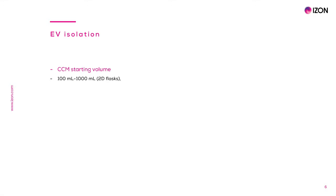The volume required to obtain enough EVs will depend on the downstream application. For 2D tissue culture flasks, more CCM volume roughly represents more cells coming from more flasks. It is recommended to start from a minimum of 100 ml of CCM and up to 1 liter or more to avoid significant EV loss during the whole isolation procedure. For bioreactors, EVs present in 12 to 18 ml of CCM have shown to have equivalent amounts to those obtained from 10 to 15 large classic flasks, or 300 to 800 ml of CCM.